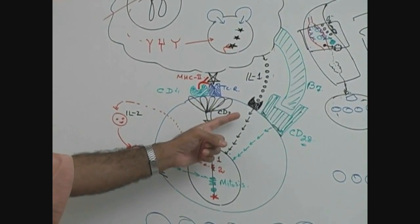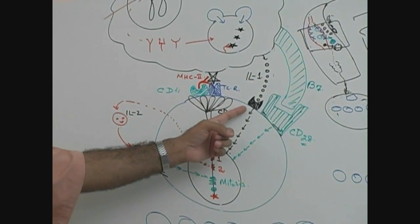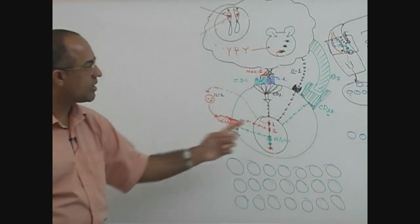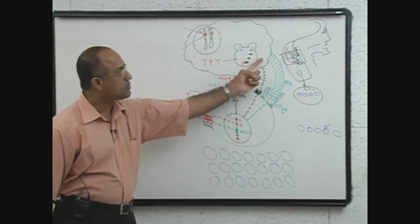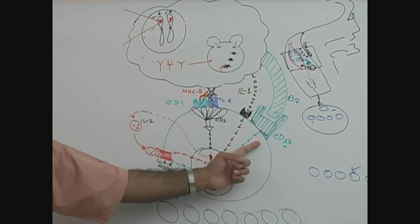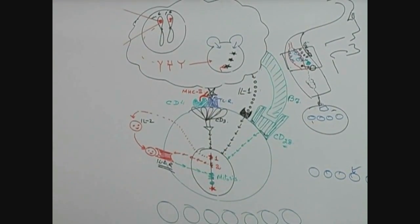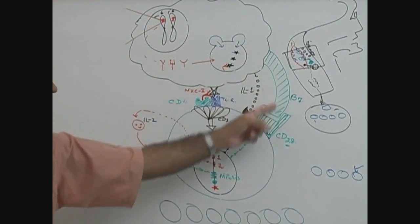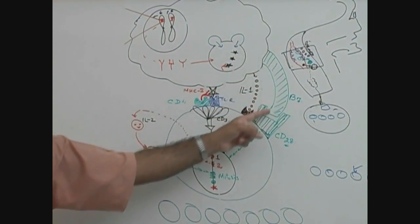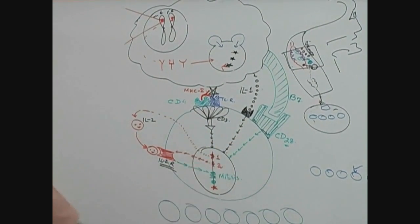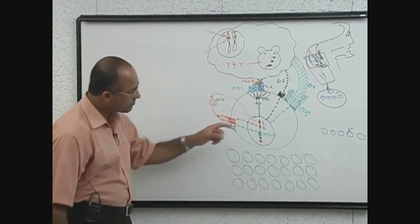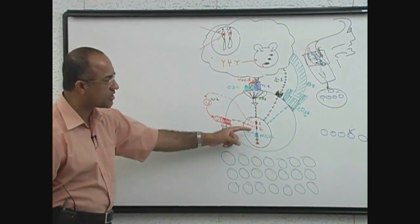Meanwhile, macrophage also releases interleukin-1, which stimulates the interleukin-1 receptors in the T cell, also stimulating the nuclear machinery of the lymphocyte. Moreover, B7 molecules expressed from the surface of macrophages interact with CD28 and give signals to the nuclear machinery. This is the primary stimulation of T cell and this is the co-stimulation of the T cell. Once a T cell has been properly selected and properly co-stimulated, then multiple genes are activated within the T cells.